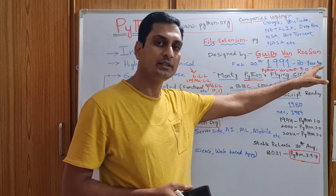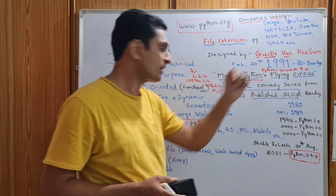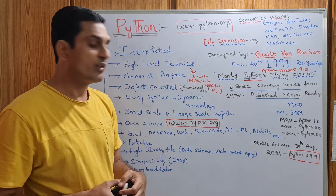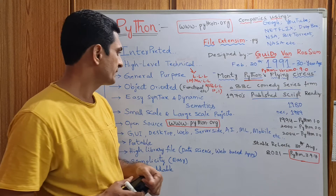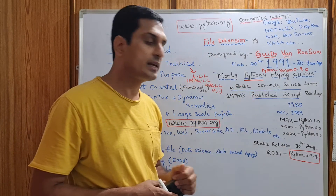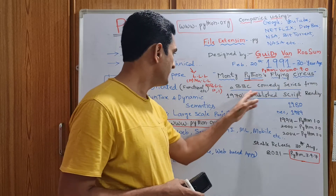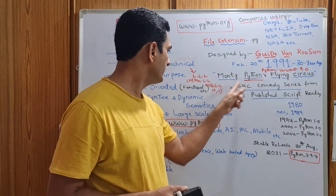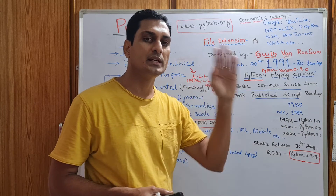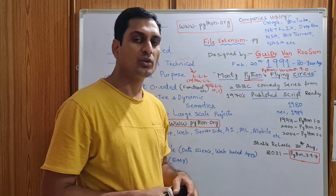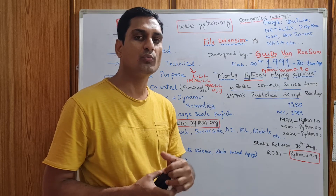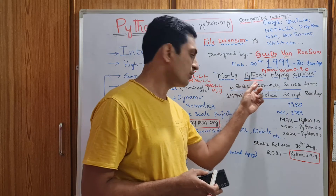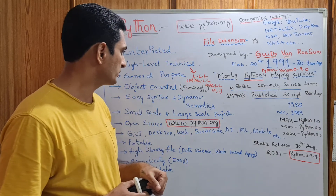The first version released was Python 0.9.0 — that was 30 years ago. As for why the name 'Python' was chosen: in the 1970s, the designer van Rossum was reading a BBC comedy series script titled 'Monty Python's Flying Circus.' At the time he was designing the new programming language, he wanted to give it an innovative and mysterious name, so he chose the word 'Python' from that book.